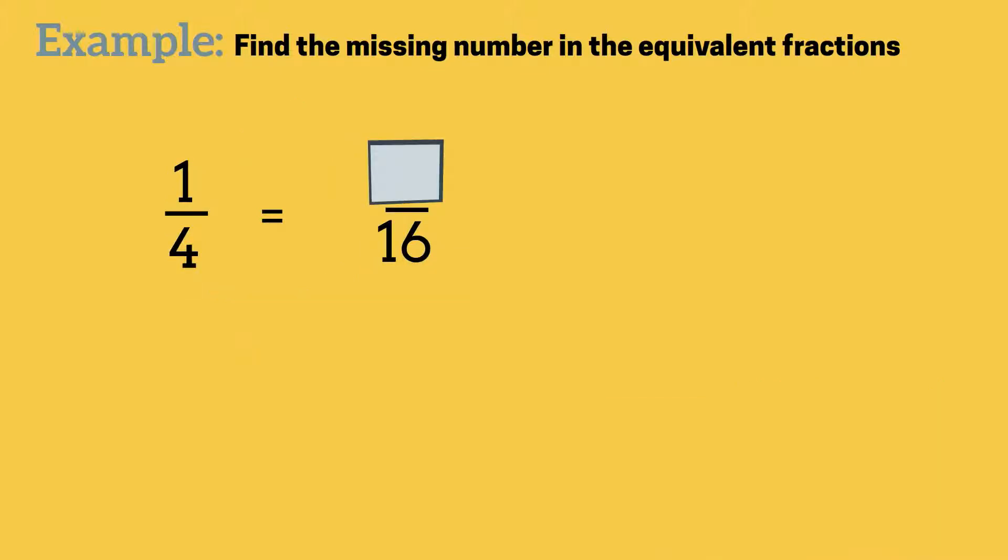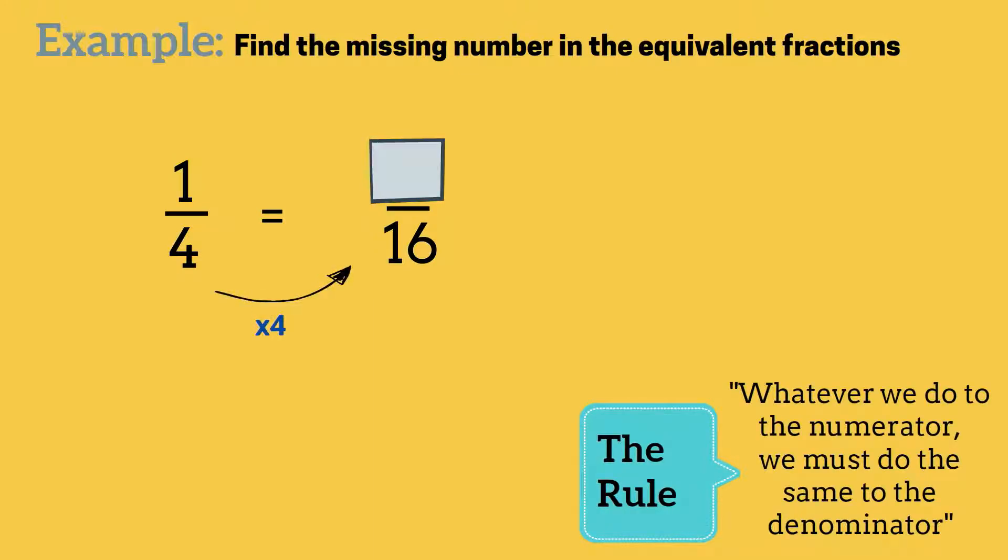Now have a look at this one. 1 quarter equals something over 16. Now what I'm going to be thinking is, how did I get from 4 to 16 on the bottom numbers? I multiplied it by 4.